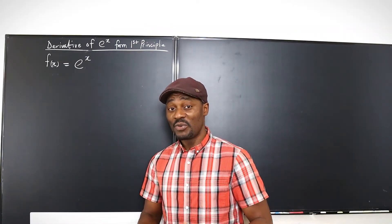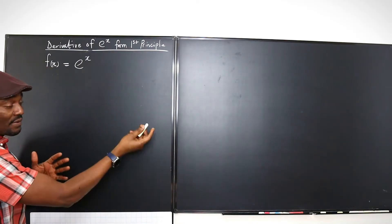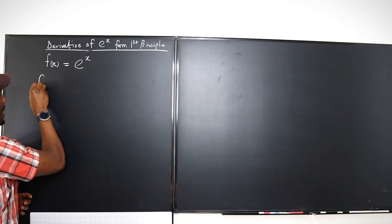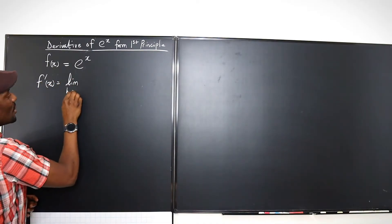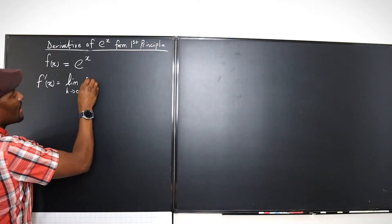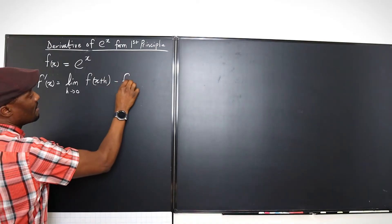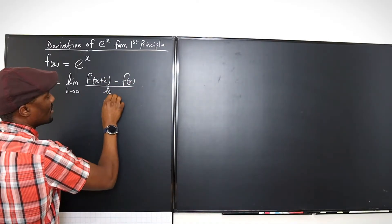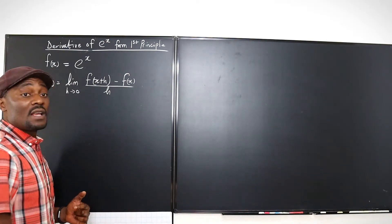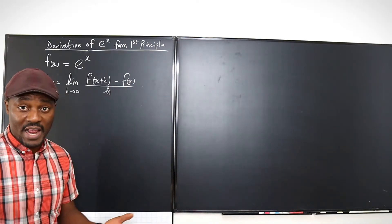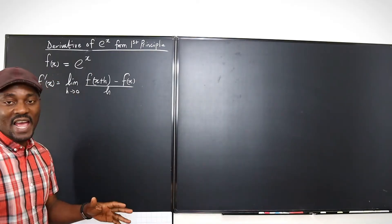I'm going to start with the definition of a derivative, which simply tells us that if f of x is whatever function you're given — in this case it's e to the x — then f prime of x is the limit as h goes to 0 of f of x plus h minus f of x, all over h. This is the same definition I've used for all the proofs: proving the derivative of sine x is cosine x, cosine x, ln of x, and now we're using it for e to the x.